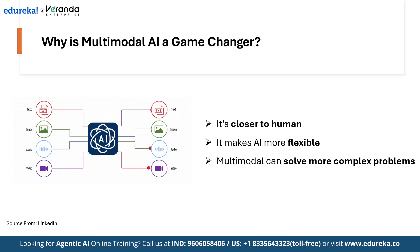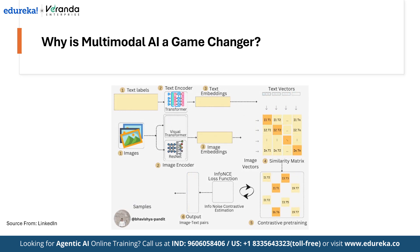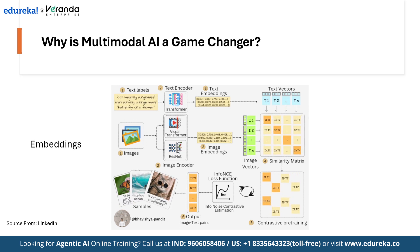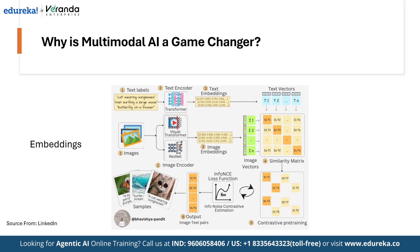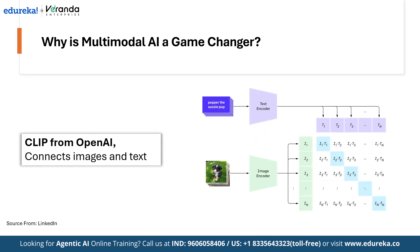For those who want a bit more technical depth: multimodal AI uses transformer-based models — the same type of models behind GPT. Text, images and audio are all converted into common representations, like a shared language of numbers called embeddings. For example, a picture of a dog and the word 'dog' are both mapped into a similar space, so the AI knows they mean the same thing. Then the model can reason across all modalities together and generate an output. A great example is CLIP from OpenAI, which connects images and text. Another is Google Gemini, designed from the ground up as a truly multimodal model.